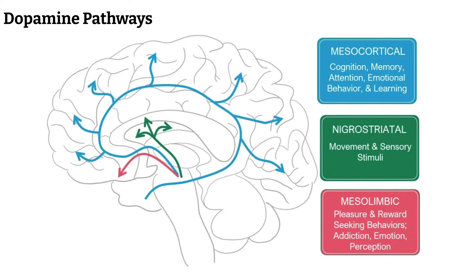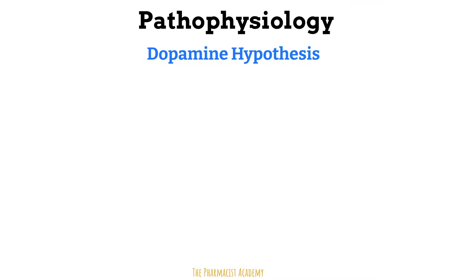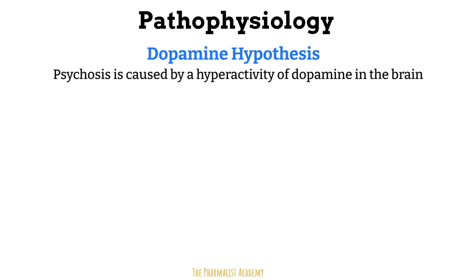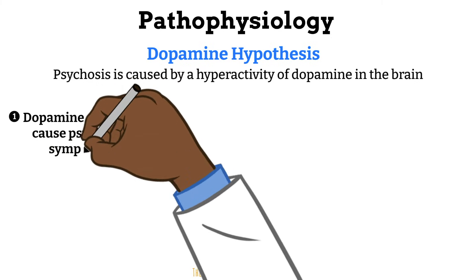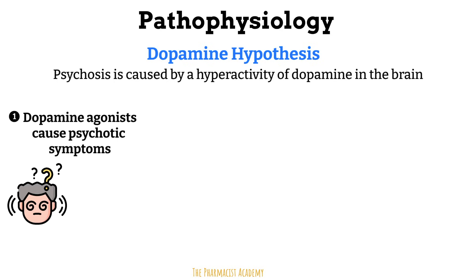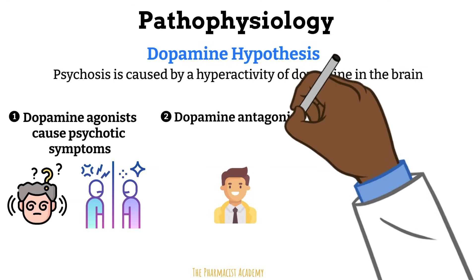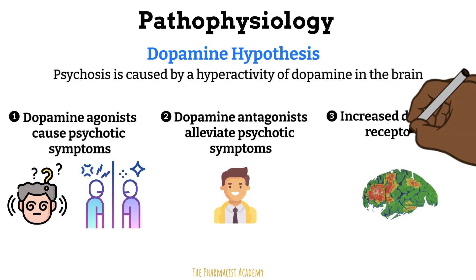Now that we have a brief introduction on dopamine, let's go back to the pathophysiology of psychosis and specifically what the dopamine hypothesis is saying. The dopamine hypothesis postulates that psychosis is caused by a hyperactivity of dopamine in the brain. There are three things supporting this. First, scientists noticed that whenever a patient received dopamine agonists like amphetamines, they experienced psychotic symptoms such as hallucinations, delusions, and disorganized thinking — pretty much anything that significantly increases brain dopamine levels can trigger these symptoms. Second, when psychotic patients are given drugs that reduce dopamine levels or activity, we see significant improvement in their symptoms. Lastly, brain imaging studies have shown that patients with schizophrenia have an increased density of dopamine receptors in certain areas of the brain.